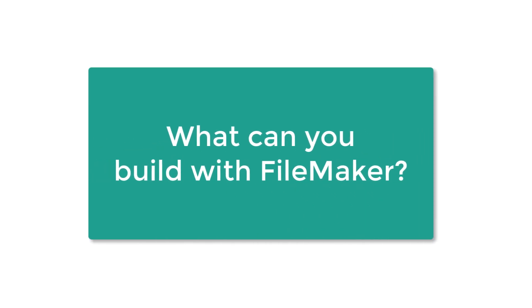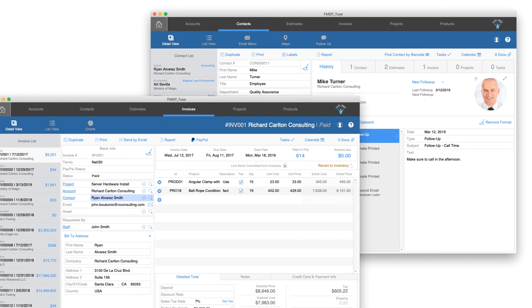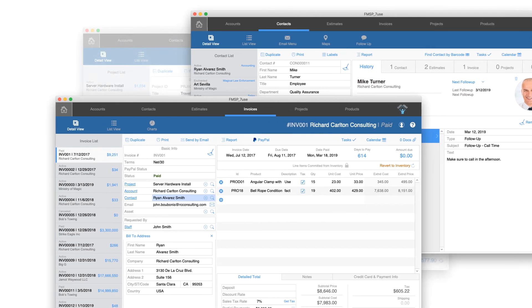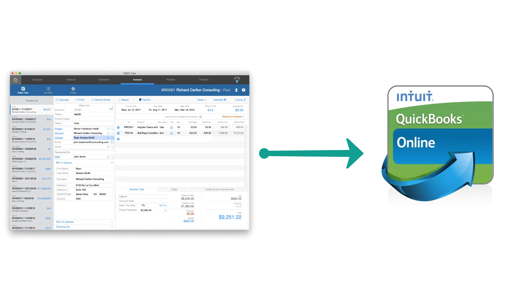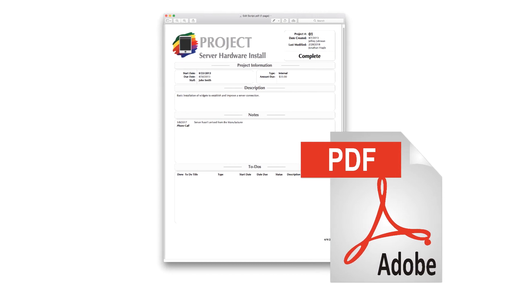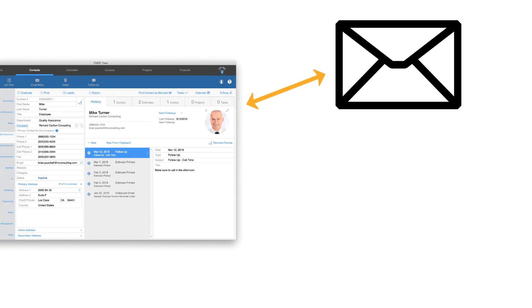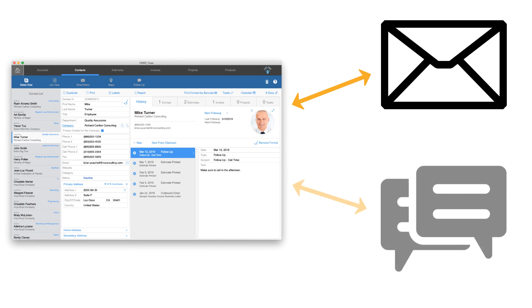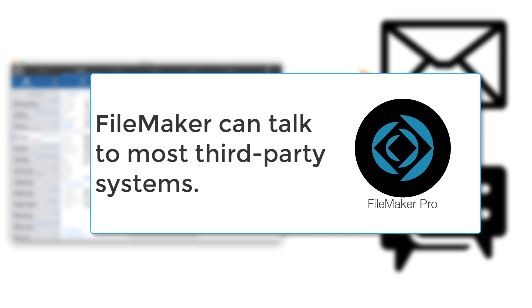So what kind of custom apps can you build with FileMaker? We've mentioned contact management, creating invoices, automatic processing of payments to PayPal. You can also do project or job tracking. You can have FileMaker talk to QuickBooks and exchange information with that application. You can generate PDFs and reports. FileMaker can even allow public access to FileMaker Server or FileMaker Cloud by using custom HTML webpages that talk directly to the FileMaker Server. FileMaker can send and receive emails, send SMS texts, and talk to almost any other third-party system.